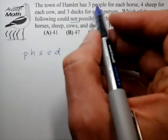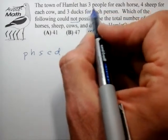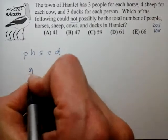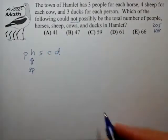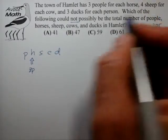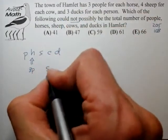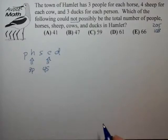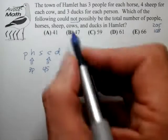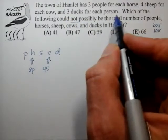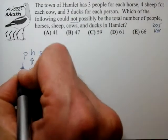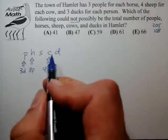And let's try to unpack what these connections are. So we have three people for each horse. So I would represent that with a 3P that I would connect with sort of an equal arrow to the H, four sheep for each cow. So I would represent that with a 4S connected with an up arrow to the cow symbol. And the last is three ducks for each person. So I would represent that with a 3D connected with an up arrow to the number of people.